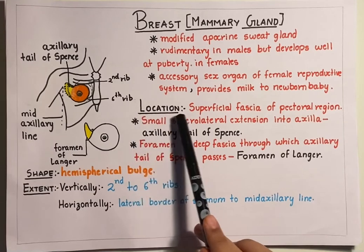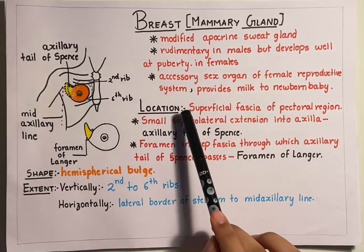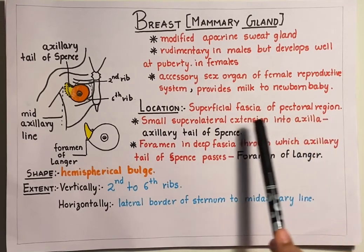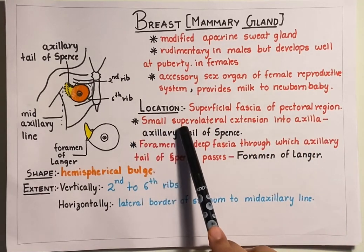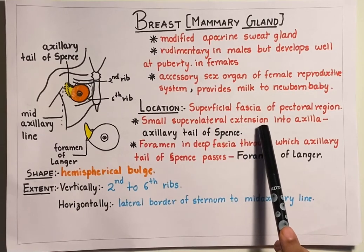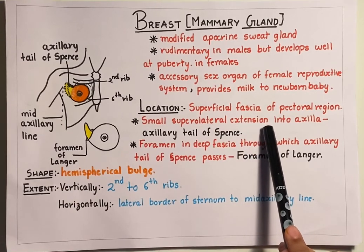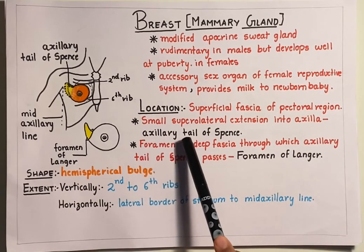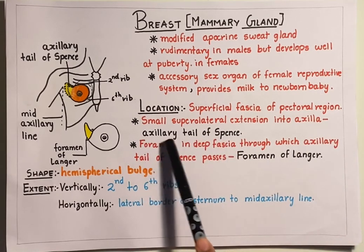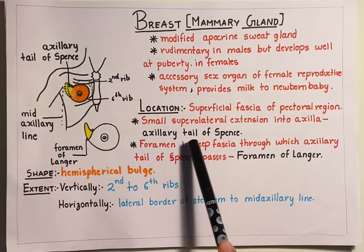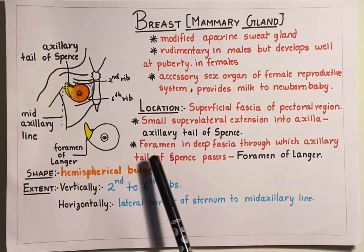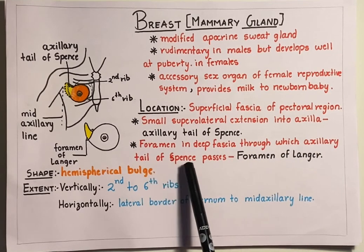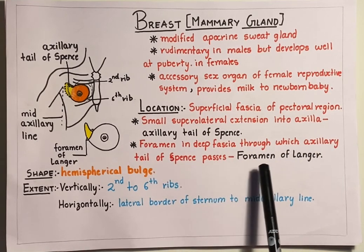Coming to the location of the breast: the breast is located in the superficial fascia of the pectoral region. However, a small superior lateral extension of the breast pierces the deep fascia and enters into the axilla. This is known as the axillary tail of Spence. The axillary tail of Spence is a common site for the occurrence of breast tumors. The foramen in the deep fascia through which the axillary tail of Spence passes is known as the foramen of Langur.